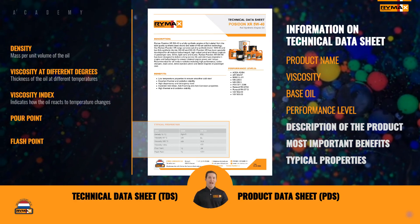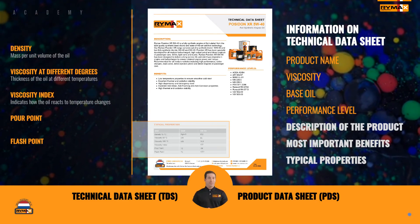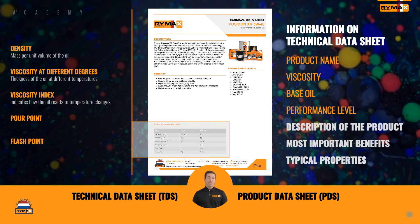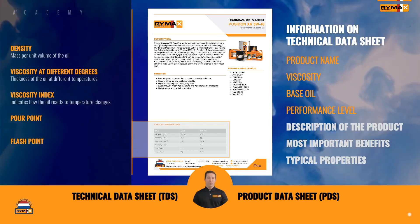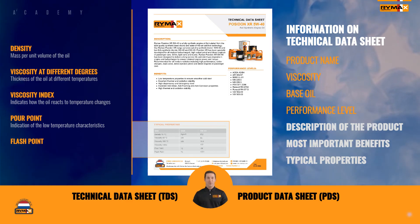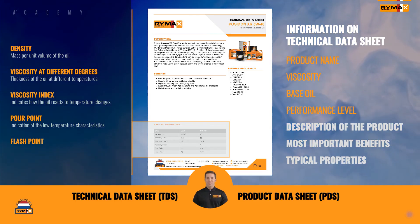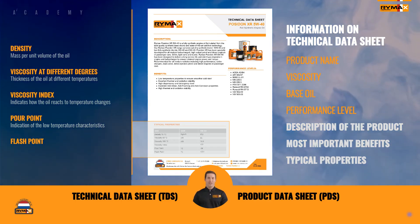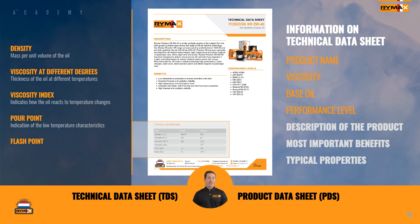The viscosity index indicates how the oil reacts to temperature changes. The higher the viscosity index, the more stable the product and the less the product reacts when the oil faces very hot or very cold temperatures. The pour point of the product is an indication of the low temperature characteristics — it is an indicator of at which low temperature the product is not functioning well anymore. So when the technical data sheet mentions a pour point of minus 30 degrees Celsius, it means that the product will not flow anymore below this temperature, so it will not reach the places which need to be lubricated, and metal-to-metal contact will occur and will lead to damage.